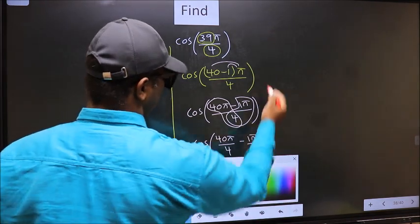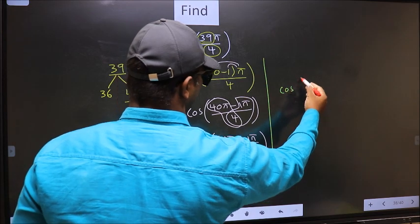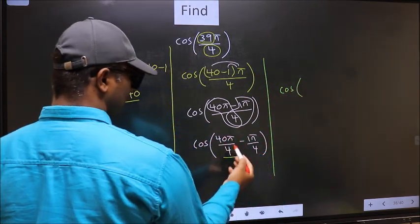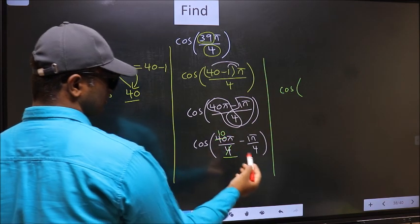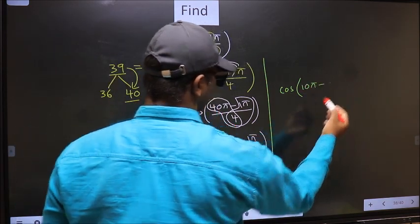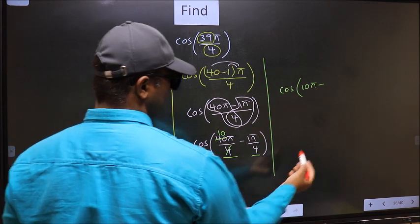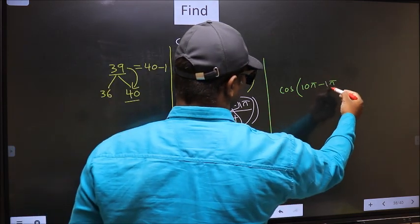Next, cos. Now here you should cancel it. 4 ones, 4 tens. So we get 10 pi minus, no change here, 1 pi by 4.